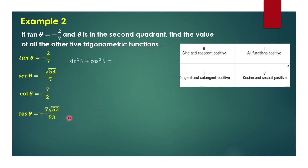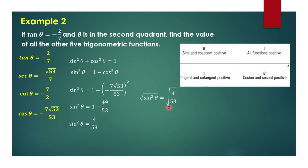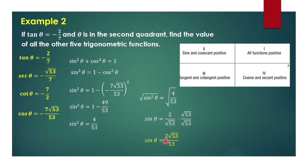Since we know cosine theta, we can use the Pythagorean identity: sine squared theta plus cosine squared theta equals 1. So sine squared theta equals 1 minus cosine squared theta. By substitution, we have 1 minus 49 over 53, which gives sine squared theta equal to 4 over 53. Taking the square root of both sides, sine theta equals 2 over square root of 53. After rationalizing, that is 2 square root of 53 over 53. Since the angle is in the second quadrant, sine is positive.